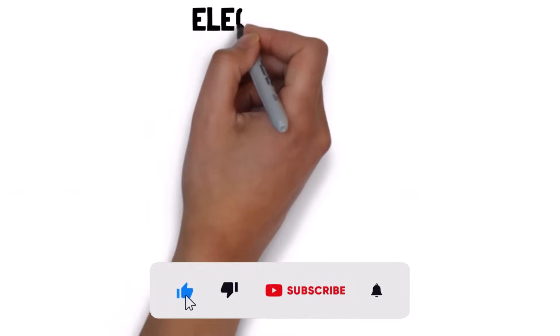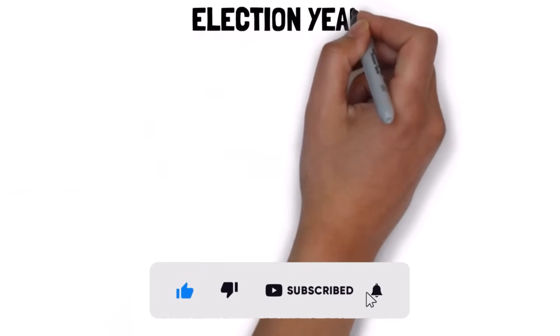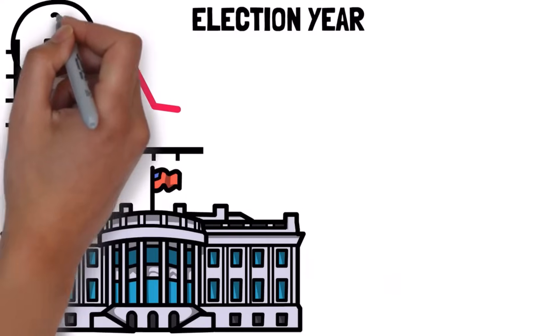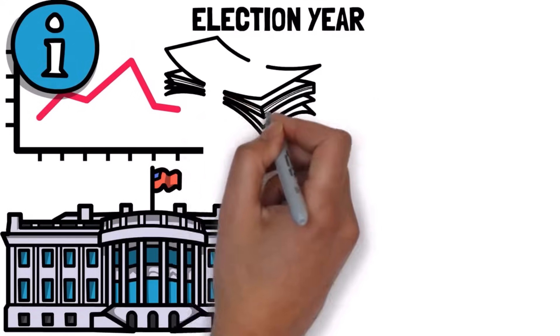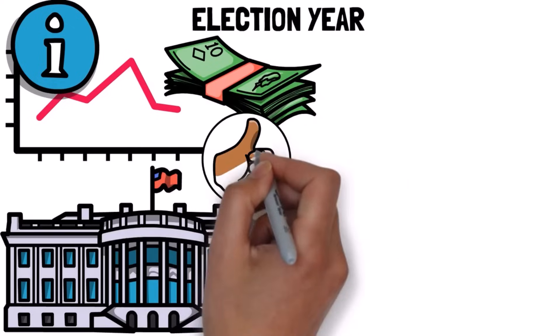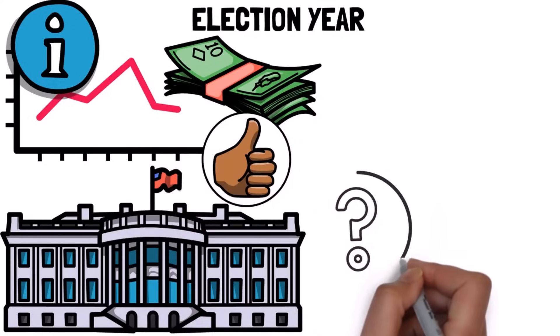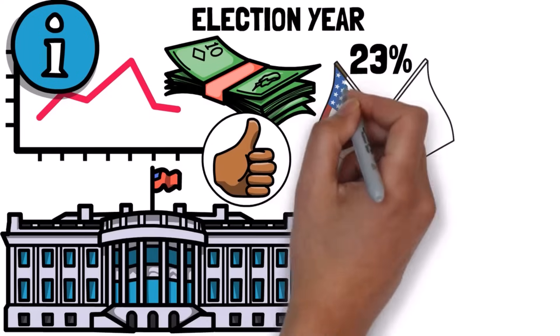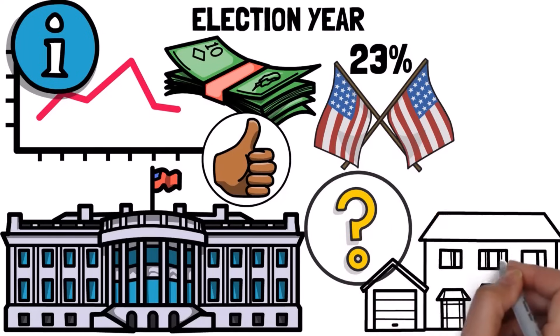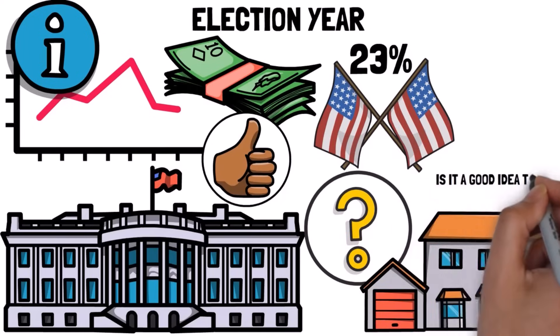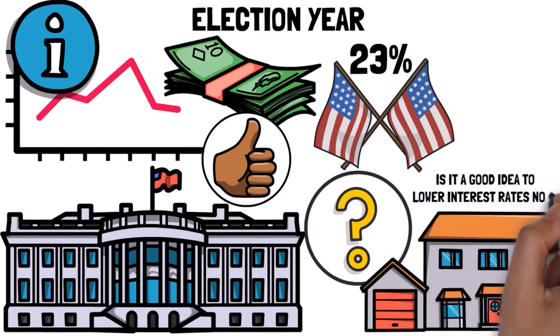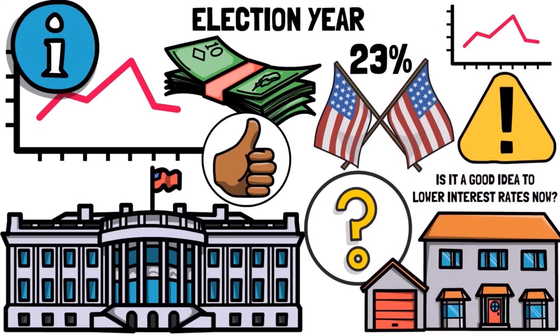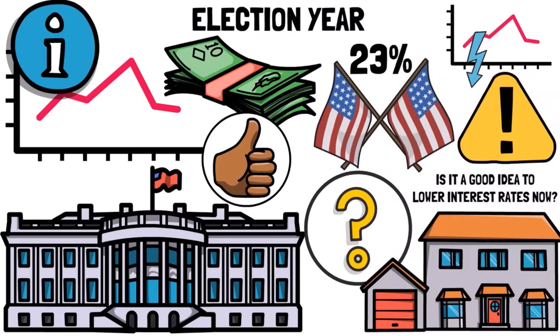Another thing to consider is that it's an election year, and we know that during an election, the government often tries to control the economy. I'll let you draw your own conclusions about that. But typically, interest rates ease off before an election. The question is, with prices still high and only 23% of Americans able to afford homes on the market, is it a good idea to lower interest rates now? That might make the pricing problem even worse. What we need is for prices to come down first and then slowly lower interest rates.